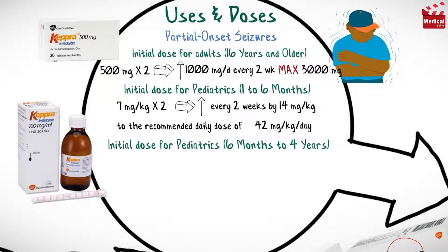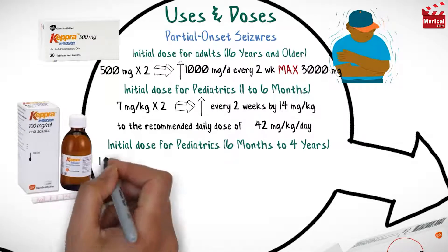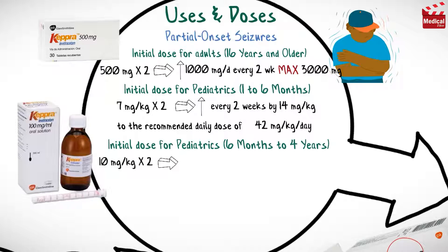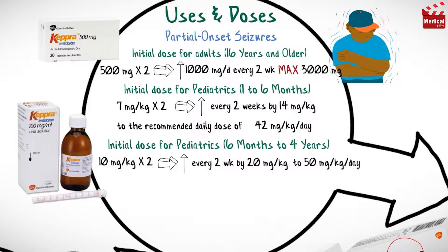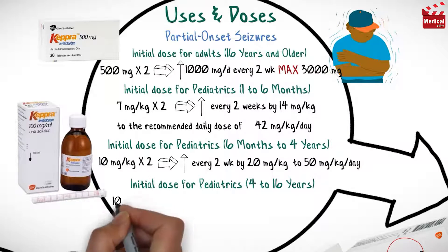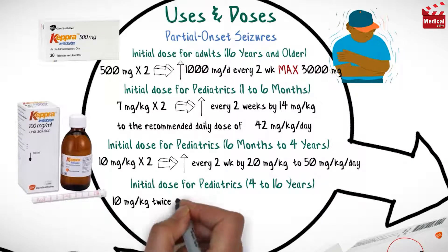For pediatrics from six months to four years, the usual initial dose is 10 milligrams per kilogram twice daily, which may be increased every two weeks by an increment of 20 milligrams per kilogram to the recommended daily dose of 50 milligrams per kilogram per day.